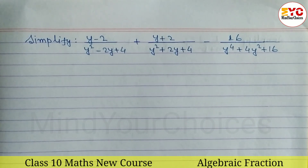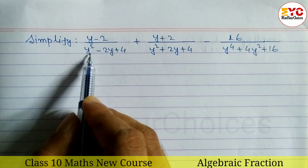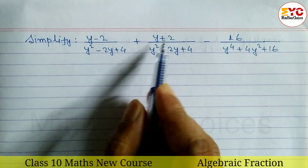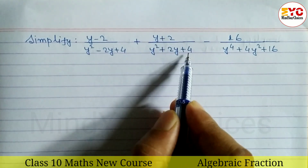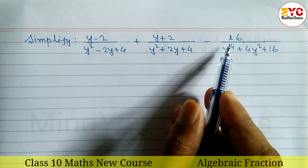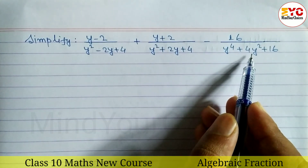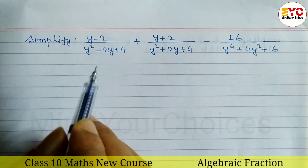For example, I am using algebraic fractions of class 10. The question is that I will need to simplify: (y minus 2) by (y squared minus 2y plus 4), similarly (y plus 2) by (y squared plus 2y plus 4), and minus 16 by (y to the power 4 plus 4y squared plus 16).